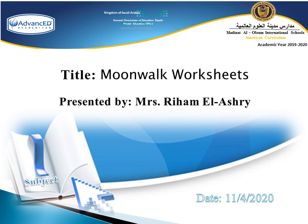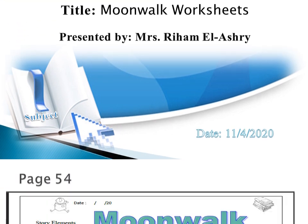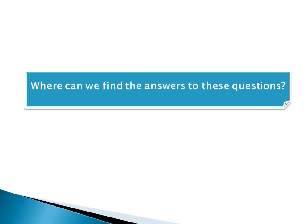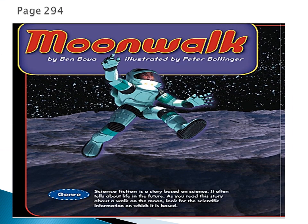Hello and welcome to our reading session. The worksheets are on the story Moonwalk. This is the first page. We usually have in the worksheets the story elements: the author, the illustrator, the genre, the author's purpose, and setting. Then the characters. So let's see what the answers to these questions are and where to find them.